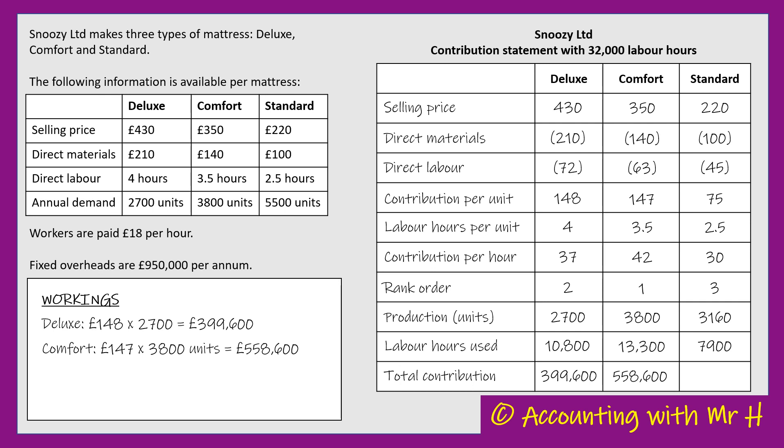And lastly, the Standard: contribution per unit £75, production in units 3,160. So £75 multiplied by 3,160 will yield £237,000 of contribution.